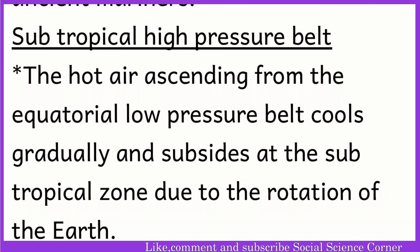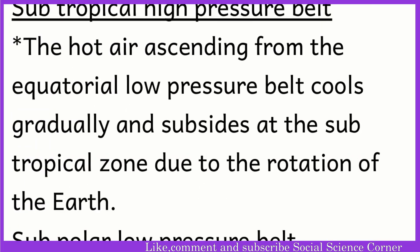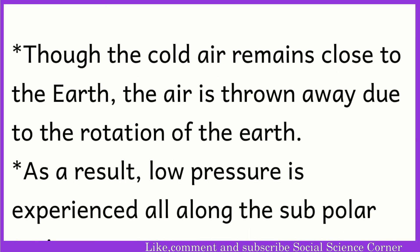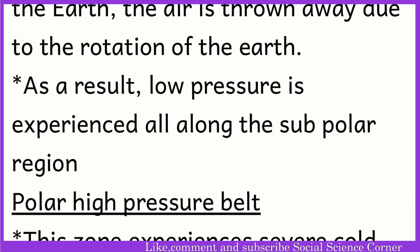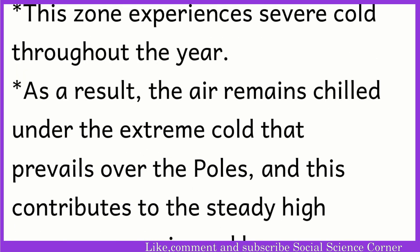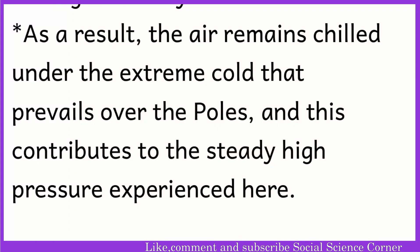The subtropical high pressure belt: the hot air ascending from the equatorial low pressure belt cools gradually and subsides at the high tropical zone due to the rotation of the earth. The subpolar low pressure belt: as this zone is close to the pole, the air is colder here. Though the cold air remains close to the earth, the air is thrown away due to the rotation of the earth, and as a result low pressure is experienced all along the subpolar region. The polar high pressure belt: this zone experiences severe cold throughout the year, the air remains chilled under extreme cold, contributing to steady high pressure here.